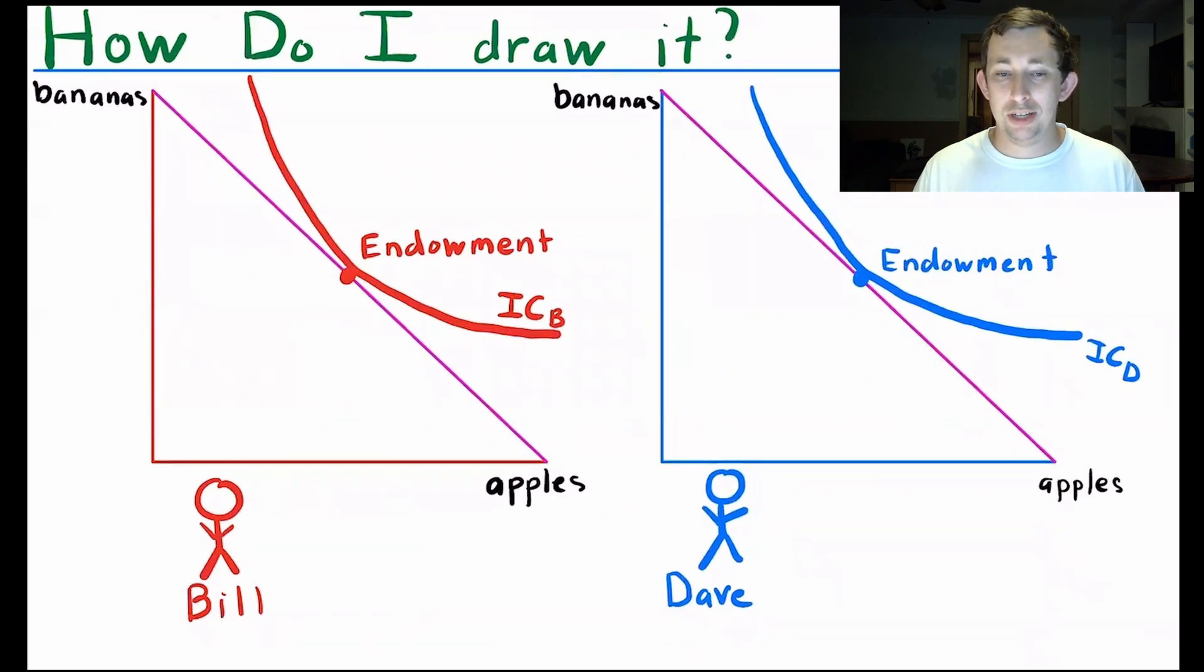And so we have already drawn their preferences, their utility, their indifference curves on this graph. We've drawn their endowment. And now we're all set up to determine the Edgeworth box.